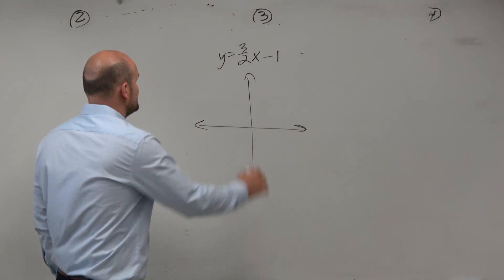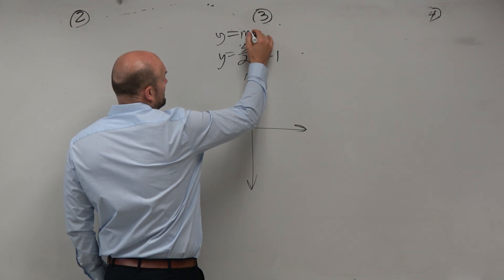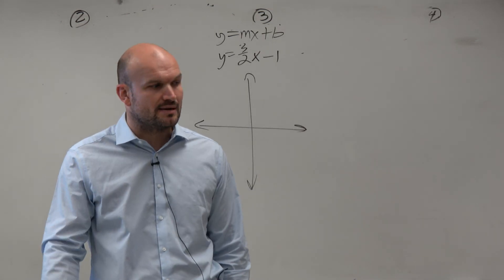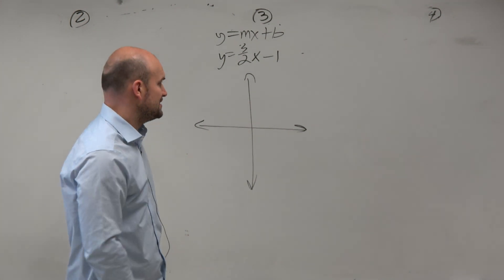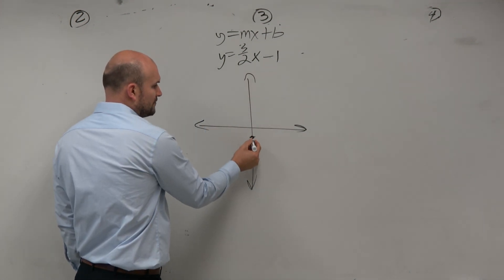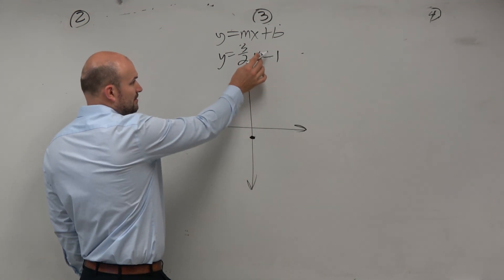But we need to graph the line. And in case to graph the line, we have y equals mx plus b. This is an equation in what we call slope-intercept form. So just a quick little reminder, this is your y-intercept, which is 0, negative 1. b represents your y-intercept.